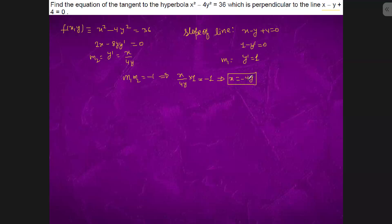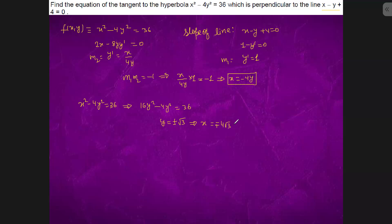We substitute x = -4y into the hyperbola equation. Solving gives y = ±√3, and correspondingly x = ∓4√3. So the two points on the hyperbola are (-4√3, √3) and (4√3, -√3).